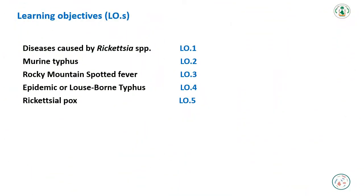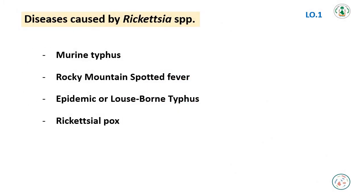Learning objectives: the diseases caused by rickettsial species include Murine Typhus, Rocky Mountain Spotted Fever, Epidemic Louse-Borne Typhus, and Rickettsial Pox.